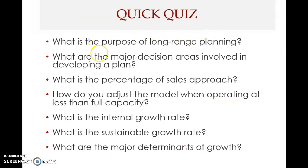In the chapter review quiz, we covered the purpose of long-range planning and the major financial decision areas — including dividend payout policy — included in a financial plan. We also covered the percentage of sales approach, which is a method of producing pro forma financial statements by assuming that cost items, asset items, and some liability items vary directly as a proportion of sales.